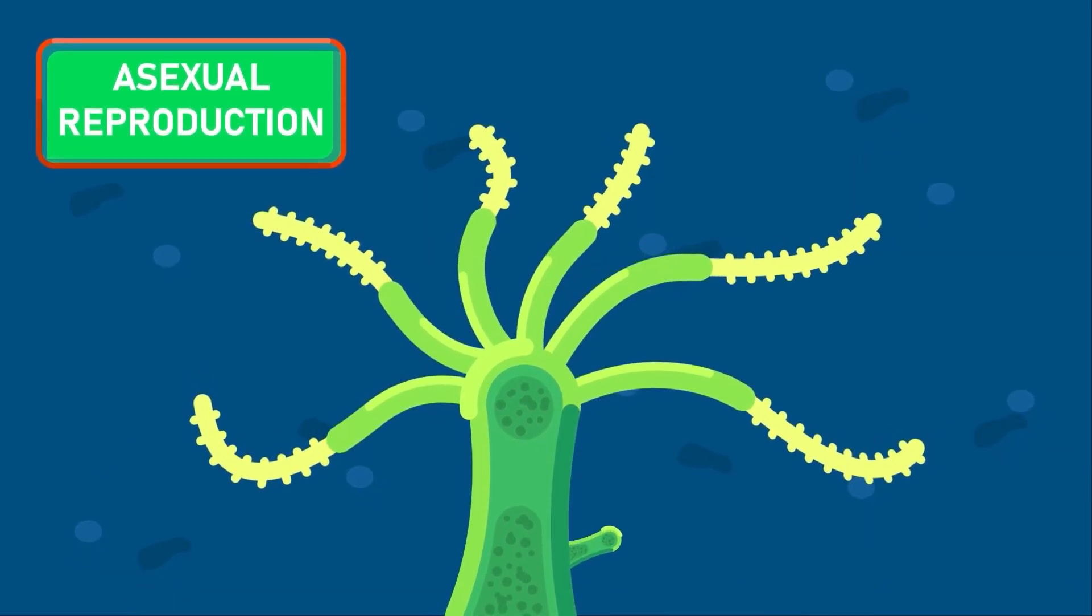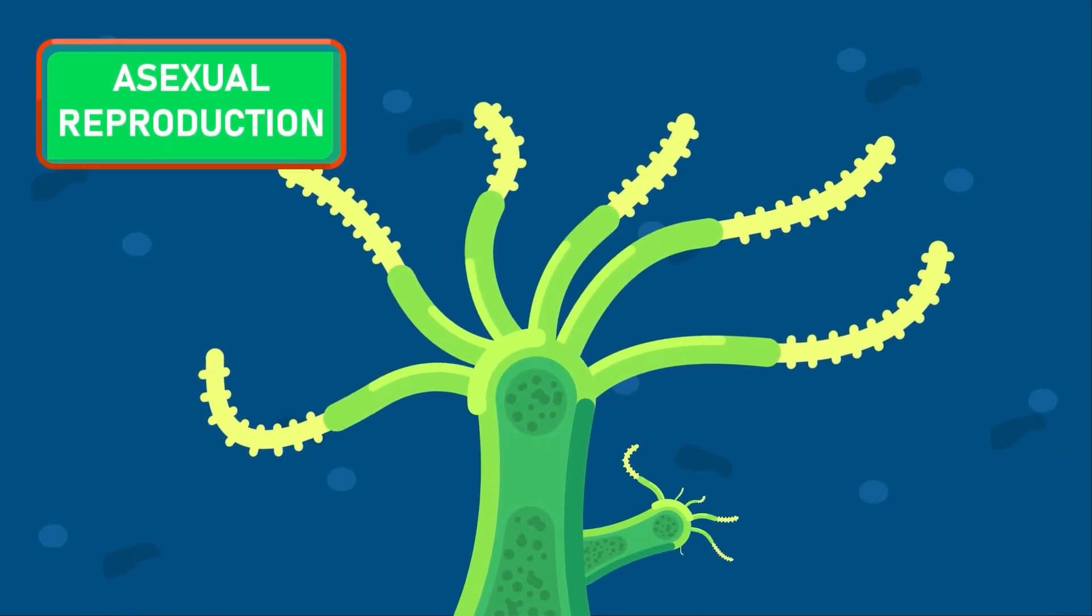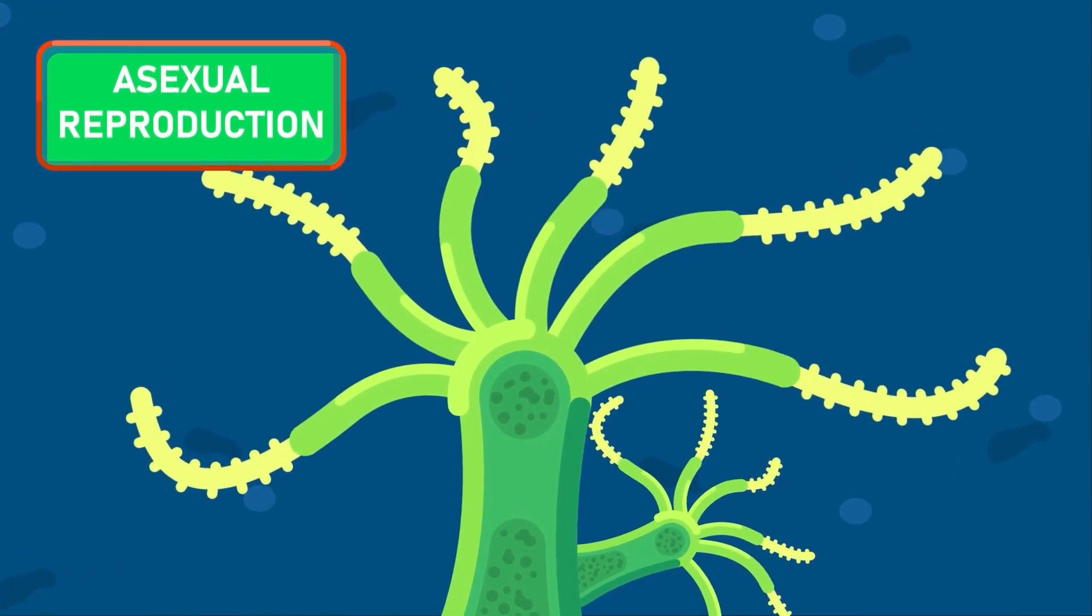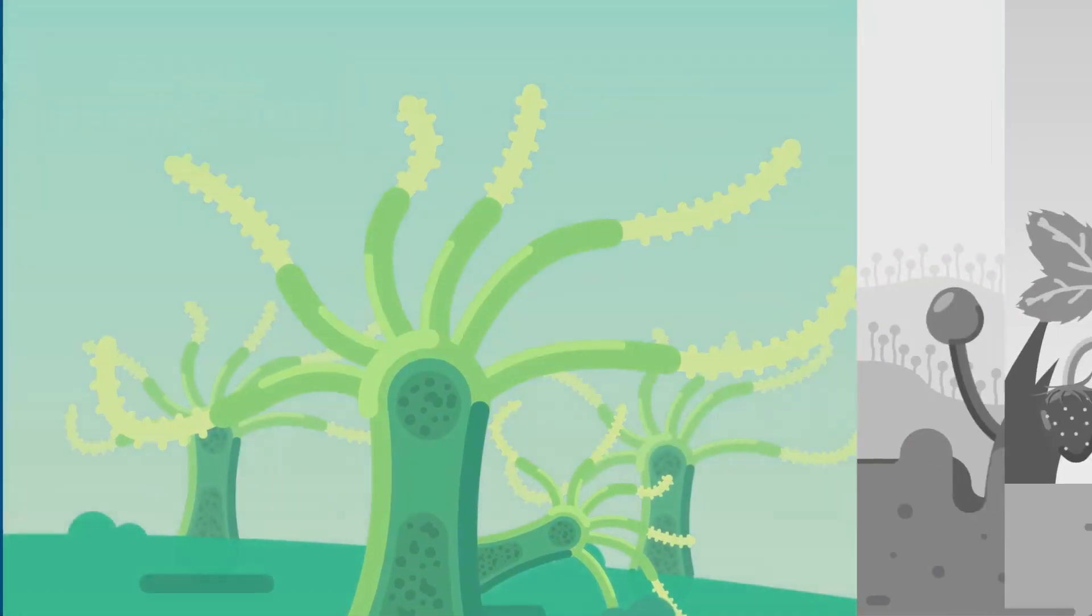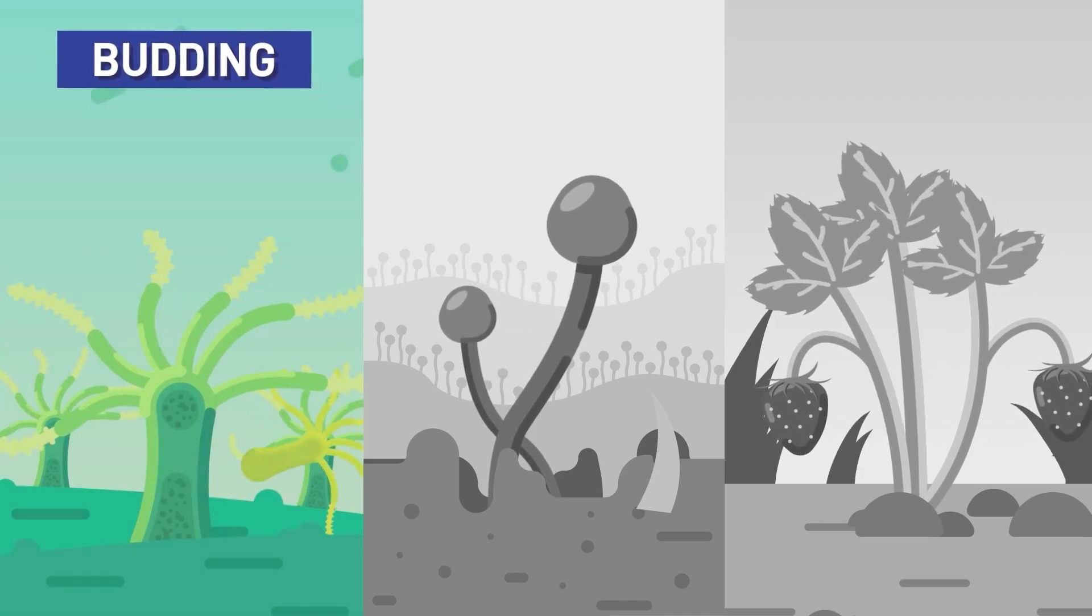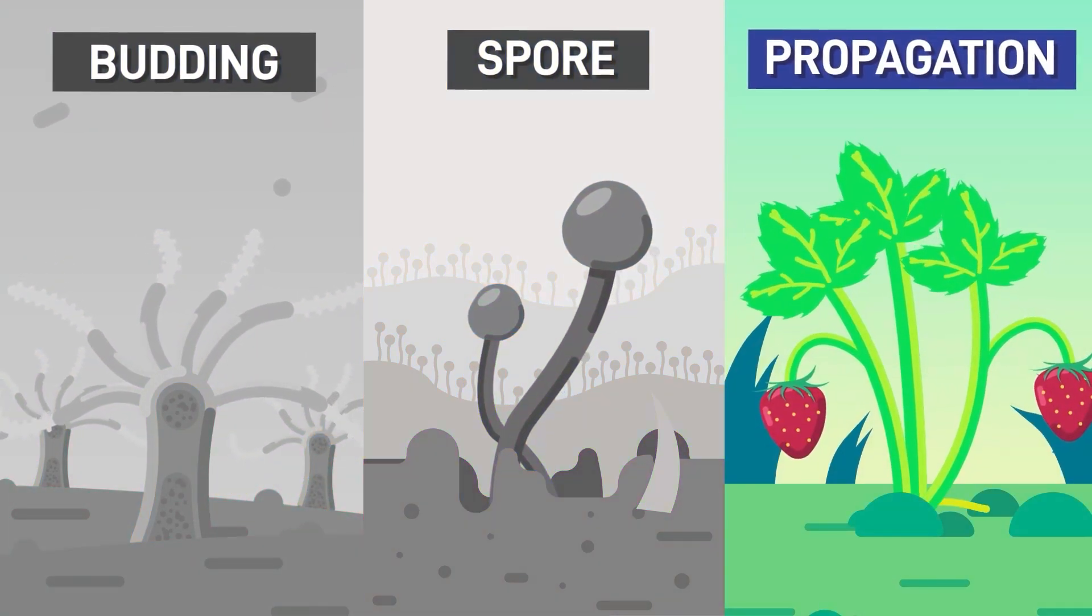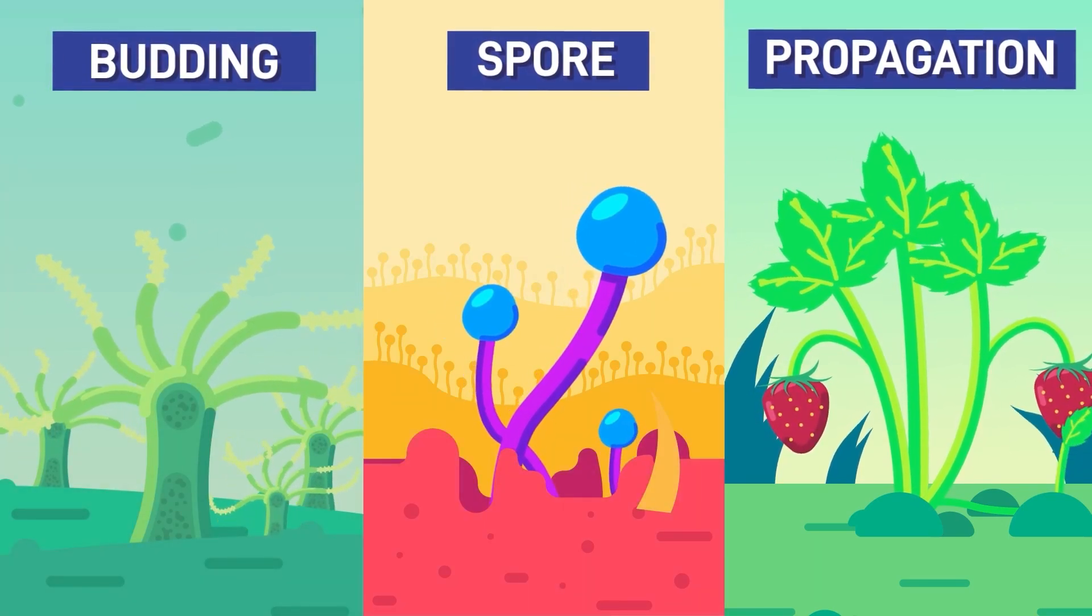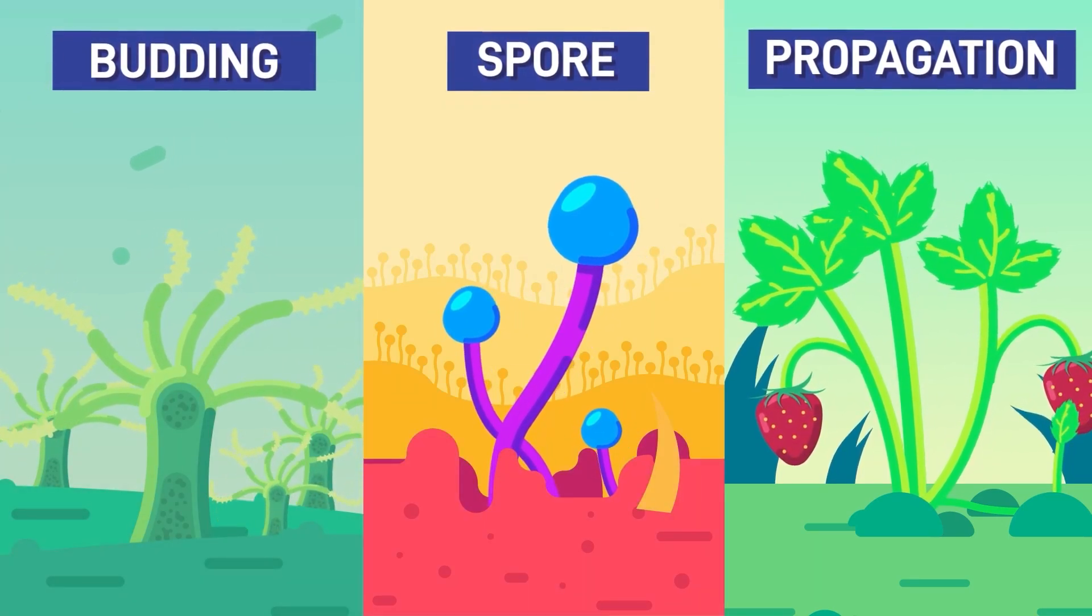Asexual reproduction is the production of new individuals that does not involve fertilization. That is, there is no fusion of two reproductive cells. In asexual reproduction, organisms reproduce by mechanisms like budding, spore formation, or vegetative propagation. In such mechanisms, organisms produce identical copies of themselves by reproduction.